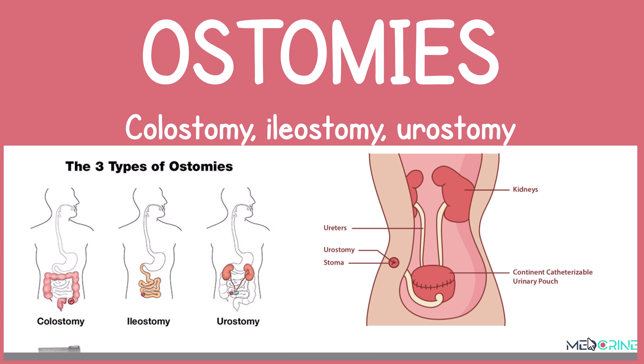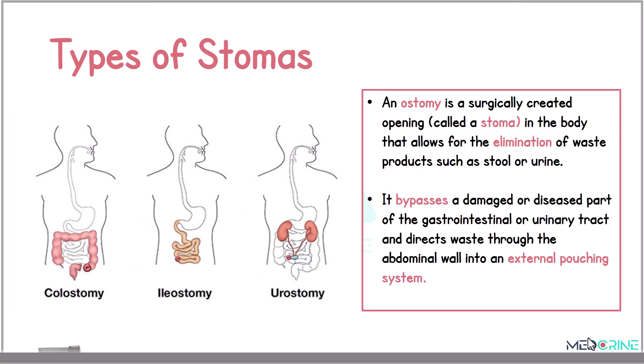Welcome. Today we shall be looking at ostomies, where we shall cover colostomies, ileostomy, and urostomy. An ostomy is a surgically created opening in the body that allows for elimination of waste products such as stool or urine. This opening bypasses a damaged or diseased part of the gastrointestinal tract or urinary tract and directs waste through the abdominal wall into an external pouching system.